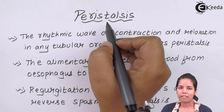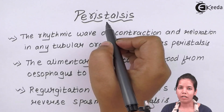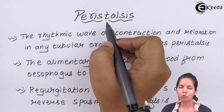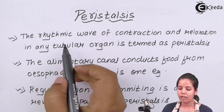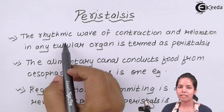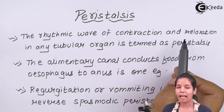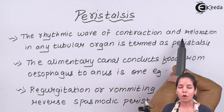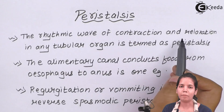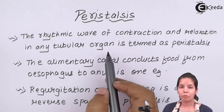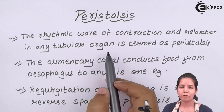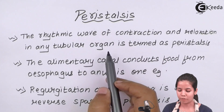Peristalsis, or you can say the downward contraction and relaxation movement just to push food. Peristalsis is nothing but a rhythmic wave of contraction and relaxation — that is, contraction happens and then relaxation happens in the esophagus or food pipe — which helps the food to move in a downward direction.